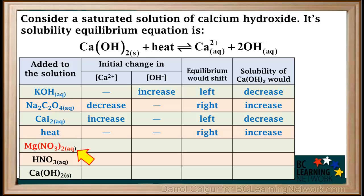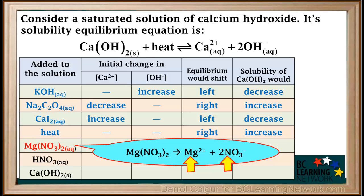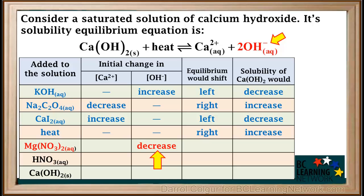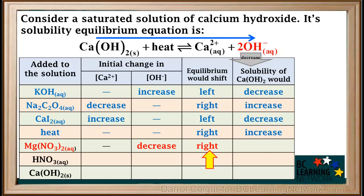Next we'll consider the addition of aqueous magnesium nitrate. Like all nitrate compounds, magnesium nitrate is soluble, so it dissociates into magnesium and nitrate ions. Nitrate ions are spectators so we can discard them. Now we check if the positive magnesium ions form a precipitate with the negative hydroxide ions in solution. Looking on the Ksp table, we see that magnesium hydroxide has a low Ksp, so magnesium ions do form a precipitate with hydroxide ions. The magnesium ions will react with some of the hydroxide ions and cause their concentration to decrease. Adding magnesium nitrate would have no initial effect on the concentration of calcium ions. Decreasing the hydroxide ion concentration will cause the equilibrium to shift to the right, increasing the solubility of calcium hydroxide.